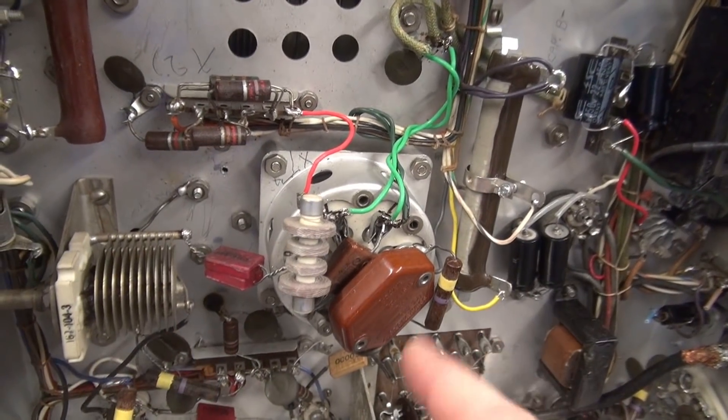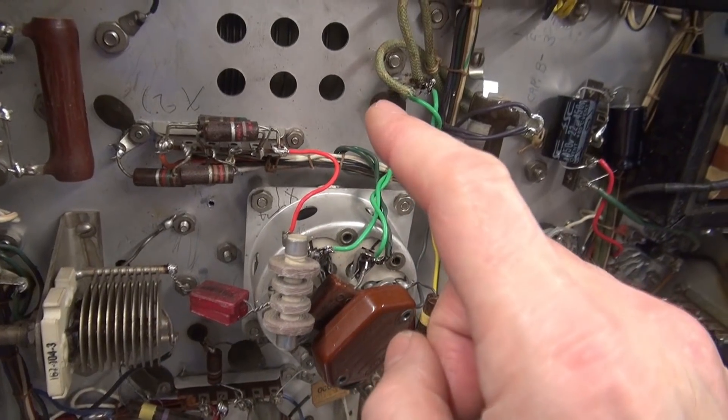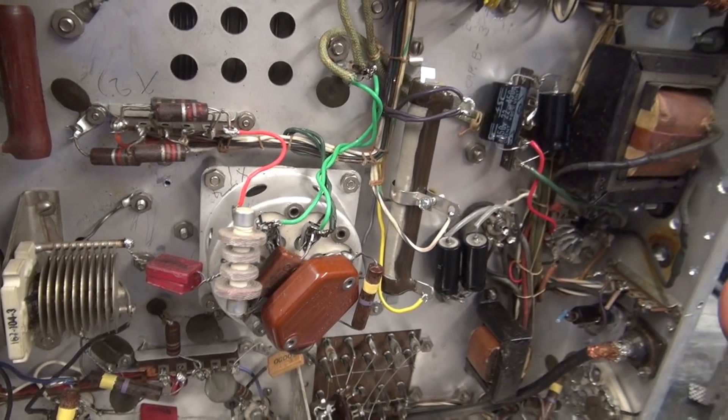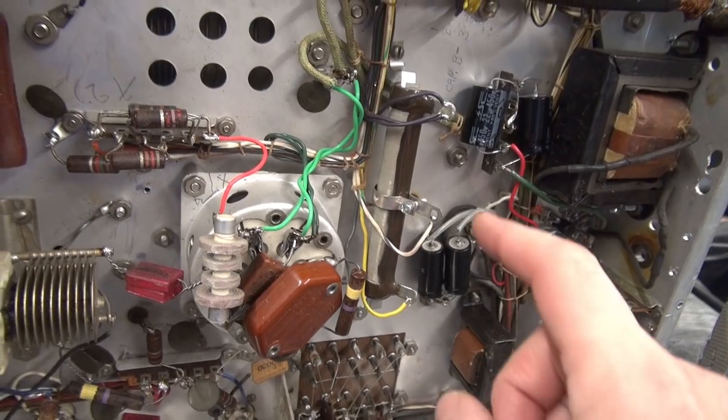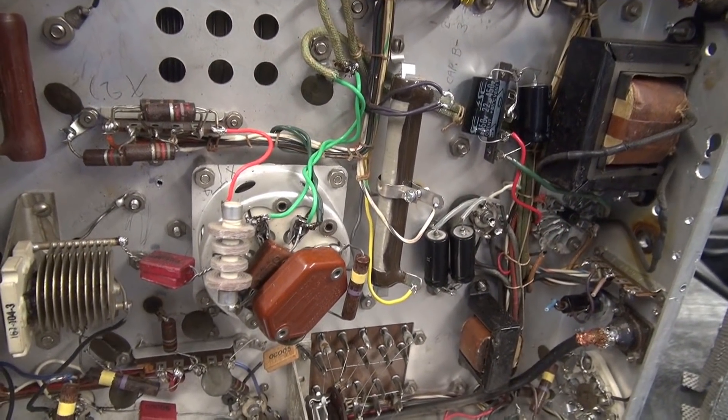so I'm going to add that. So I've removed the cage, I'm going to put this RFC choke back where it belongs. We'll do the improvements to the power supply and the filament circuit, and we'll try it again.